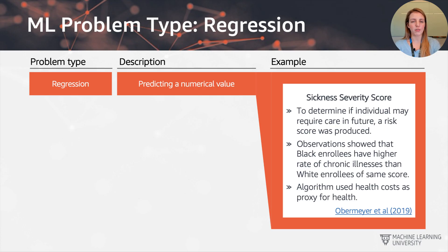The first example is regression, which is trying to predict a continuous numeric value. All of the examples we'll see on this slide and the following slides are going to be examples of things gone wrong. Here we have an insurance company that was trying to predict a sickness severity score to determine if an individual may require additional care in the future.